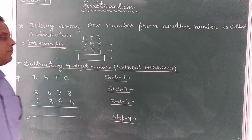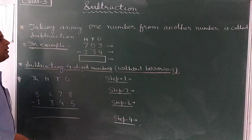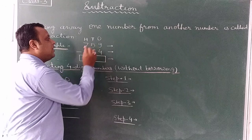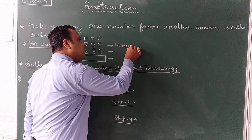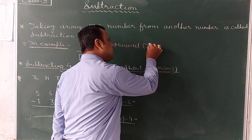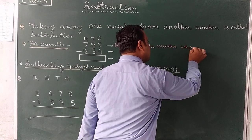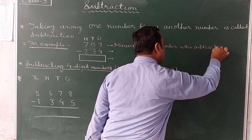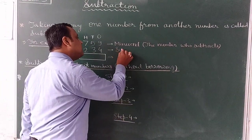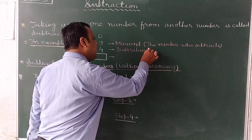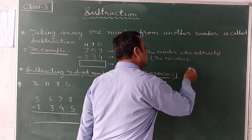It will be explained by giving an example. Here two numbers are given: the first one is 759 and another one is 250. 759 is the number from which we subtract — it is called the minuend. The number which is being subtracted is called the subtrahend.